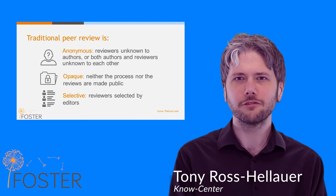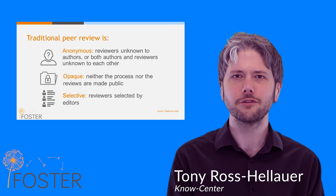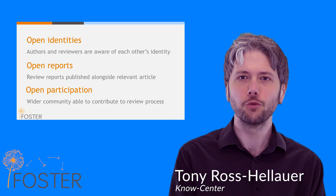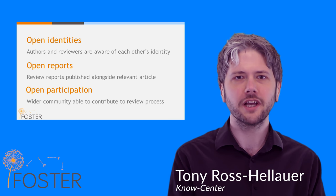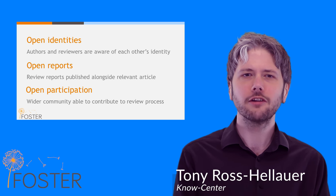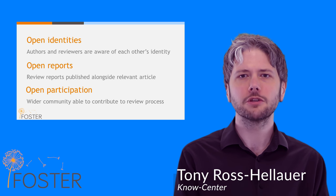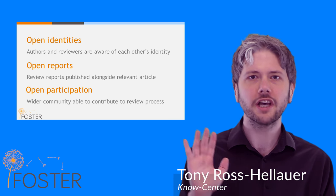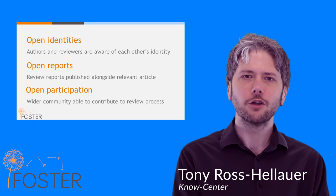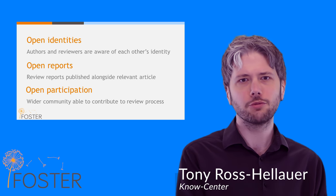Traditional peer review is anonymous, confidential, and closed only to invited reviewers. In contrast, the main aspects of open peer review are open identities, where authors and reviewers are aware of each other's identities; open reports, where review reports are published alongside the relevant article; and open participation, where the wider community are able to contribute to the review process.